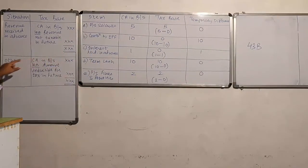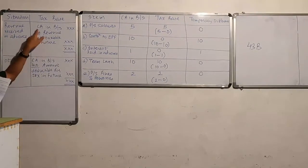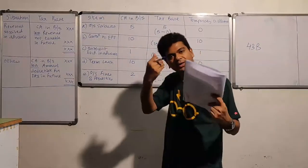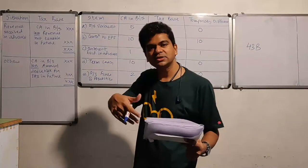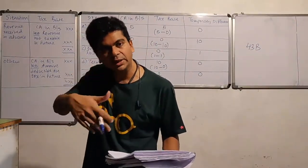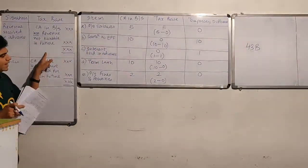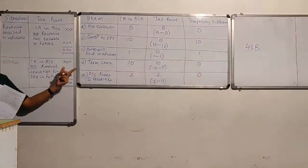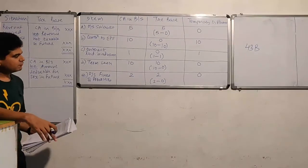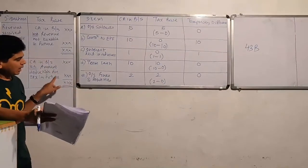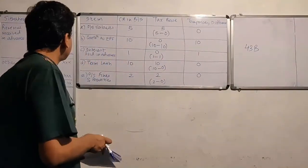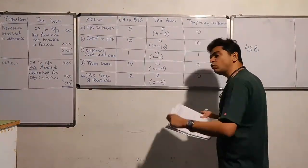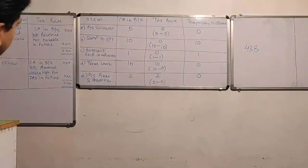Interest received in advance — carrying amount is one lakh, tax has already been paid on the entire one lakh in the current year, so revenue not taxable in future is the entire one lakh, giving a tax base of zero. Term loan — no deduction for principal repayment, so tax base is ten and temporary difference is zero. Outstanding fines and penalties — disallowed for tax, amount deductible in future is zero, tax base is two.